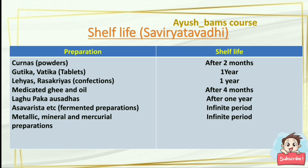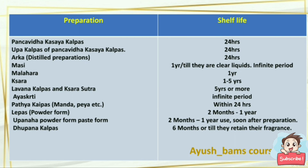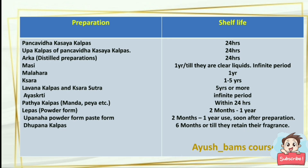Shelf life refers to how long drugs will remain effective before expiring. Churnas (powders) expire after two months of preparation. Gutikas and vortikas (tablets) expire in one year. Confections expire in one year. Medicated ghee and oil expire after four months. Laghu paka aushadha shelf life is one year. Asava and arista shelf life is infinite. Metallic, mineral, and mercurial preparations also have an infinite shelf life. Pancha valkala kashaya kalpana and its upakalpana have a shelf life of 24 hours.